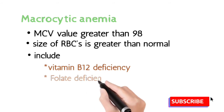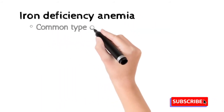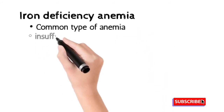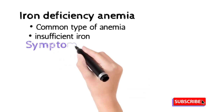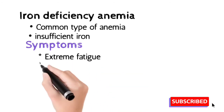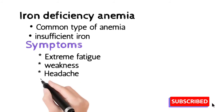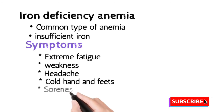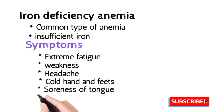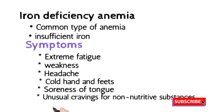Iron deficiency anemia is the most common type of anemia. It is due to deficiency or insufficient supply of iron to the body, as iron is required for hemoglobin production. In the early stages, symptoms are not prominent, but when the condition worsens, symptoms appear: extreme fatigue, weakness, headache, cold hands and feet, soreness of the tongue, and unusual craving for non-nutritive substances such as ice, dirt, or starch.